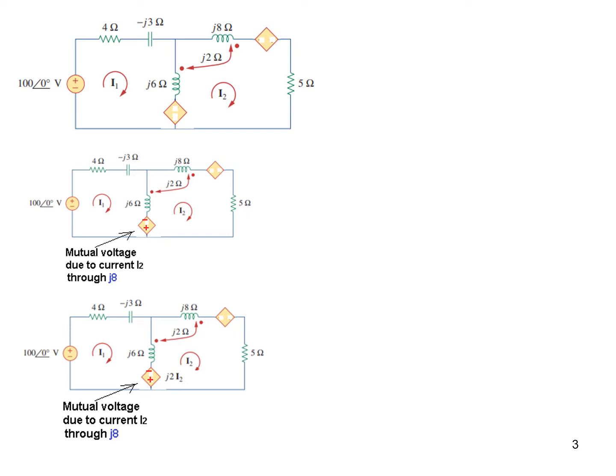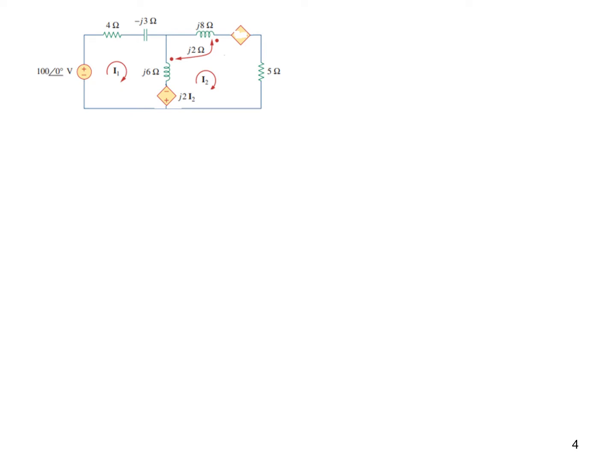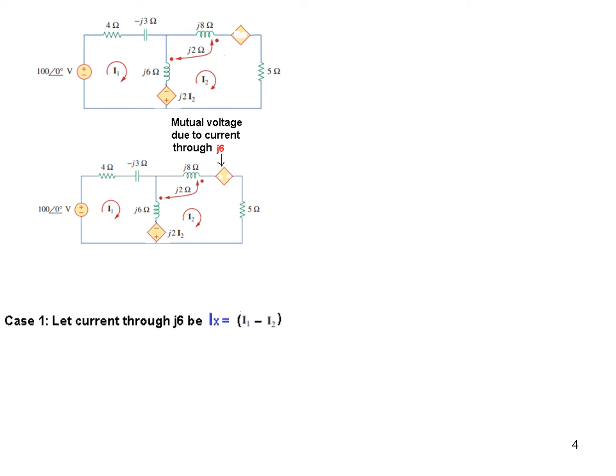This was for the current I2. And now the slightly difficult part, the current flowing through J6 and its effect. So the voltage, this one is due to the current flowing through J6, mutual voltage due to current through J6. And what are the options we have? We can have three cases.